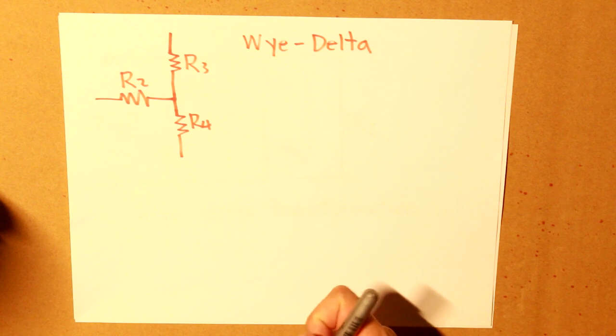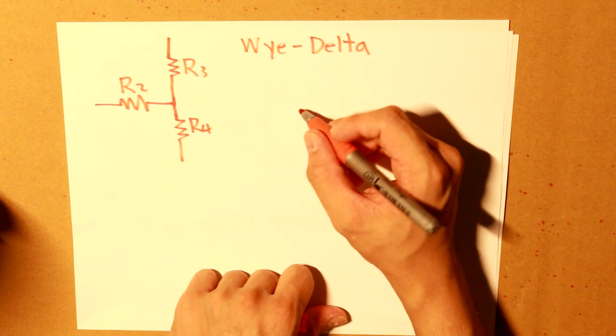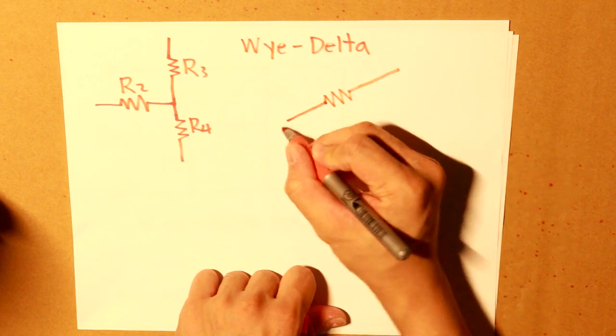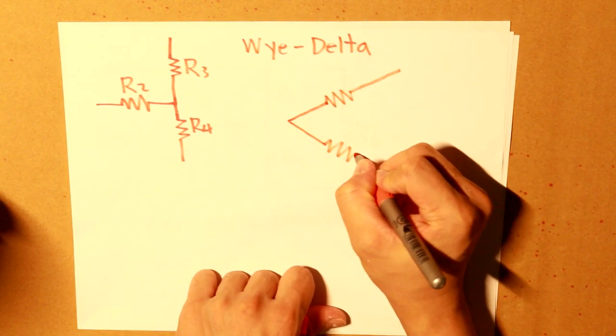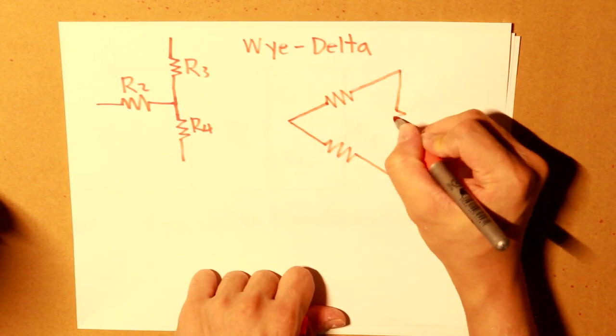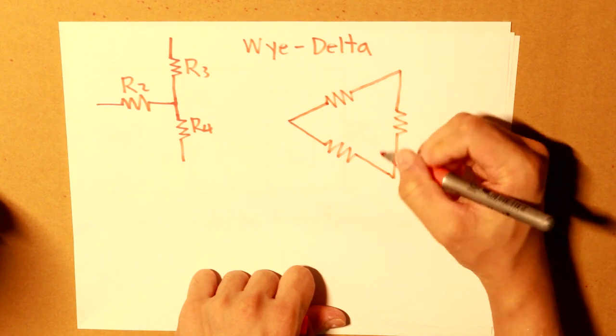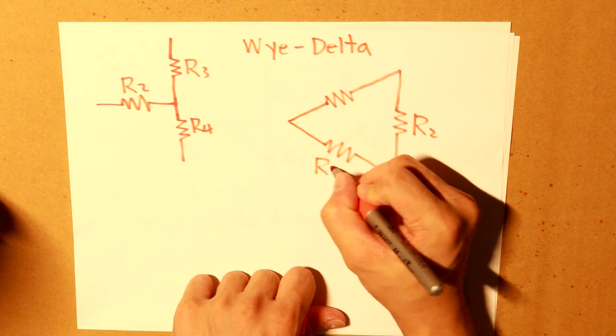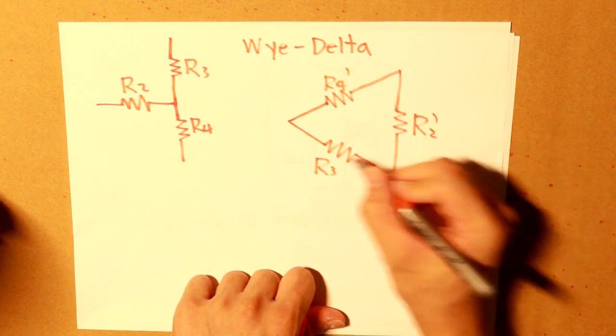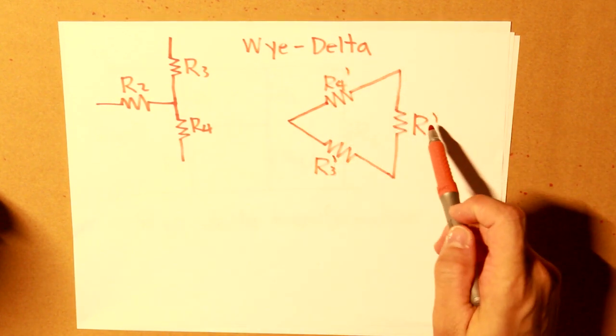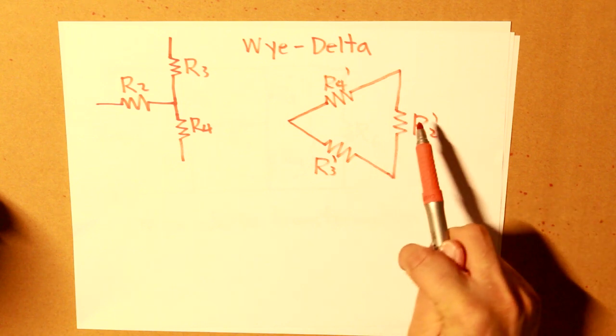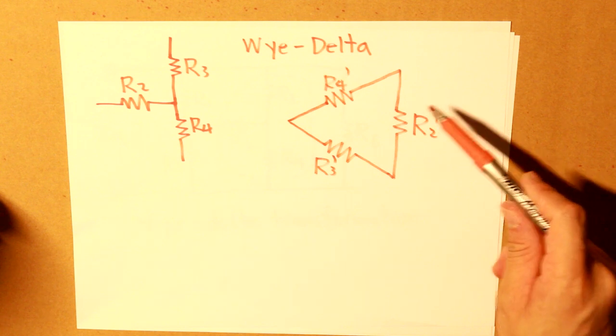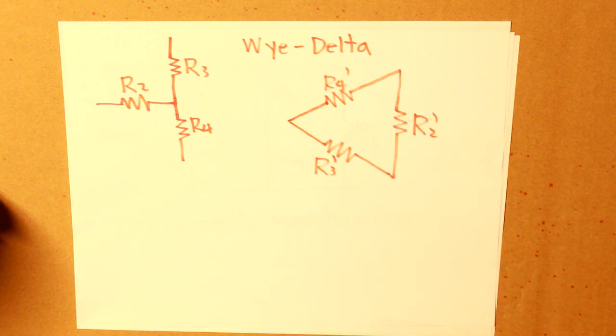And our Delta would look like this. What I'm going to do is I'm going to draw an apostrophe here to indicate the new formation. So this is how our Delta circuit will look like.